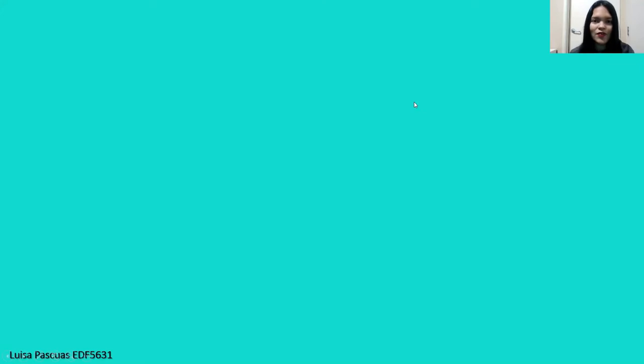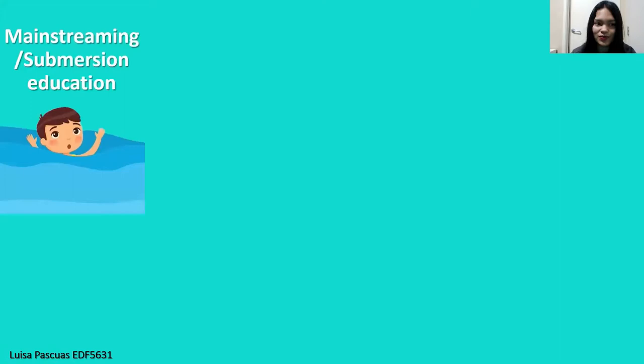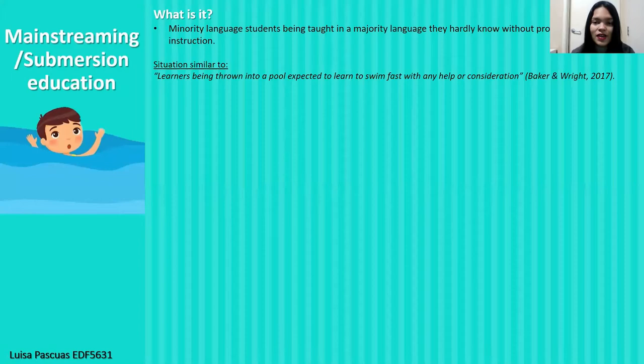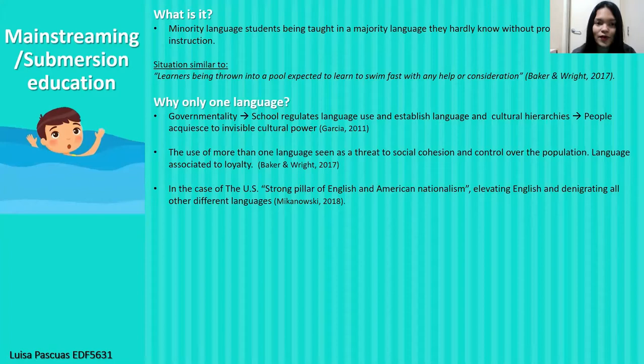Hello everyone. I will talk about two types of bilingual education programs in order to highlight the role of these teachers. The first one is mainstream and submersion education. In this one, minority language students are taught in a majority language without the provision of any special instruction. This type of criterion responds to different ideologies that support the use of only one language.